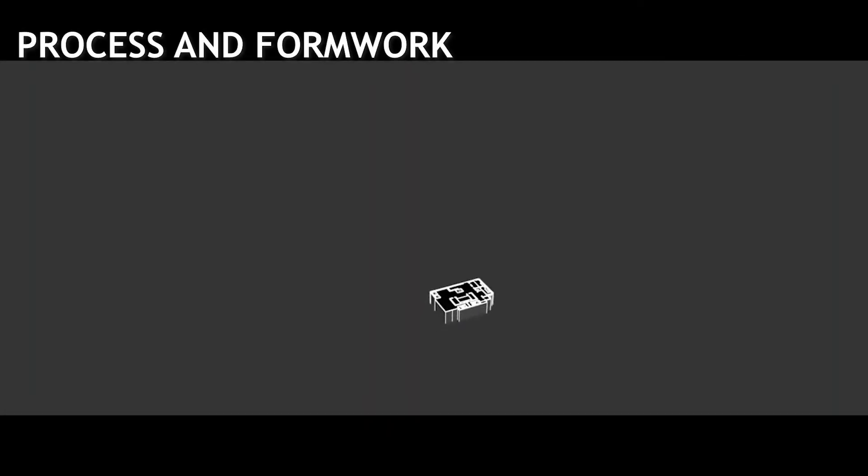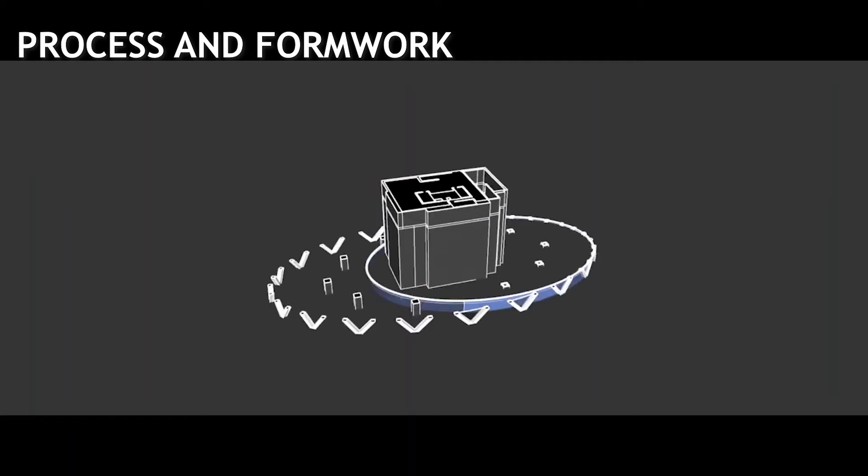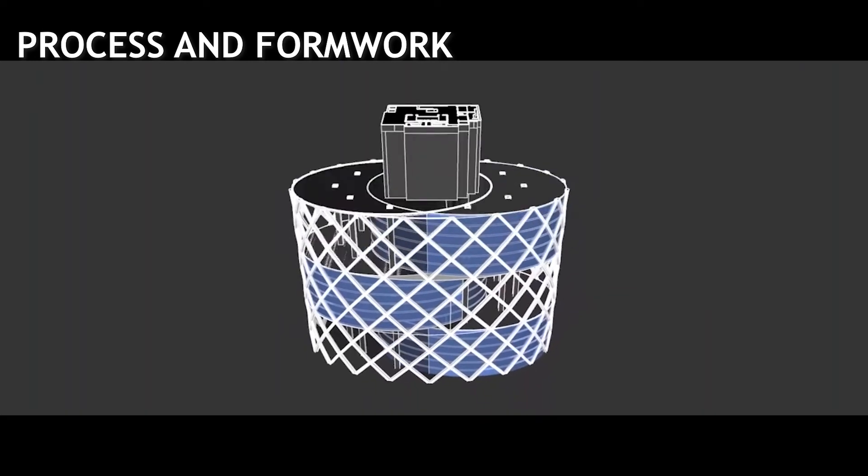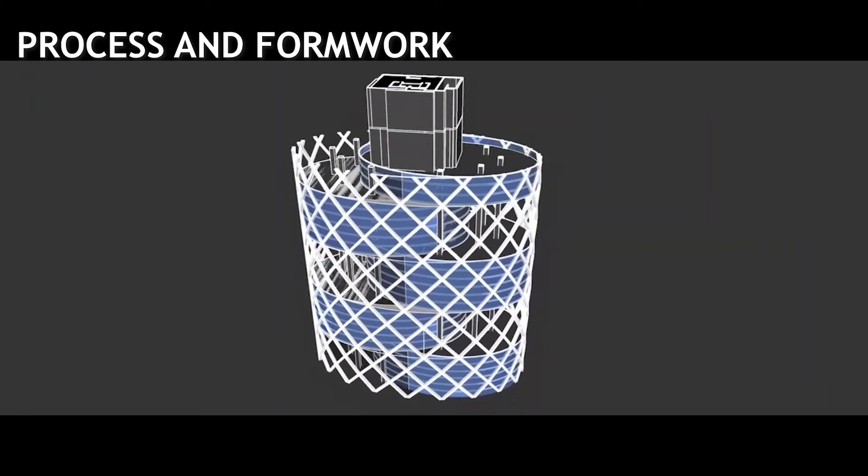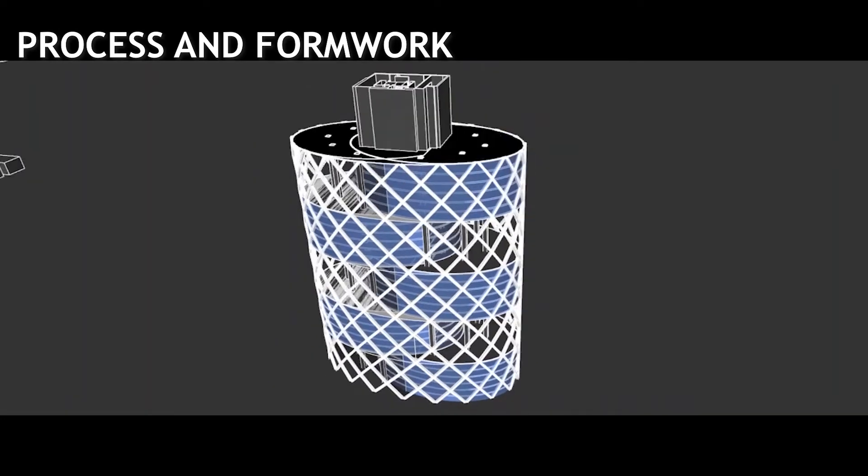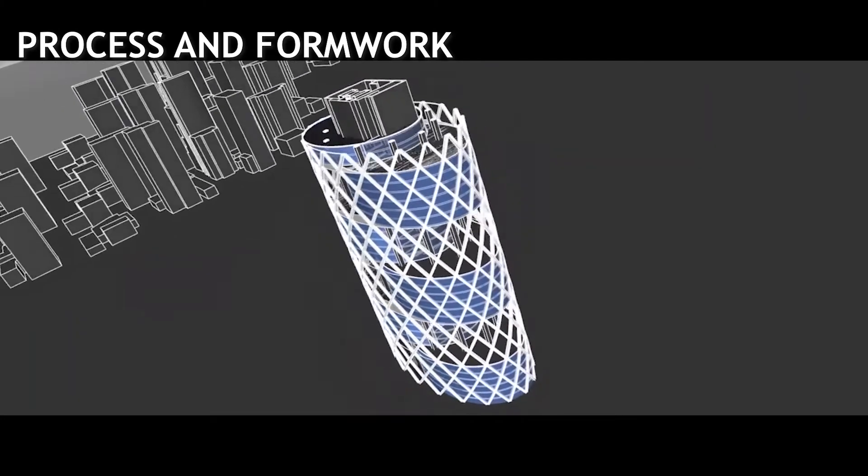The construction process of the superstructure starting with the core of the structure with jump formwork, and then continuing the construction of the exterior framework with diagrid columns and the floor slabs by using slip formwork, and then finally finishing the structure with facade treatment and curtain walls.